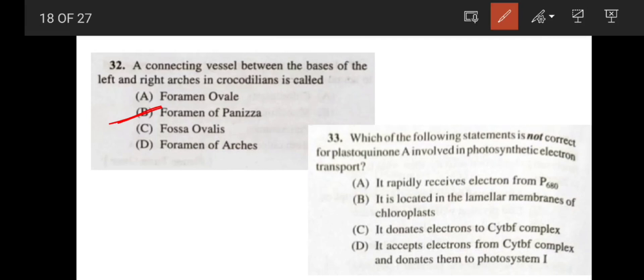Next, which of the following statement is not correct for plastoquinone A involved in photosynthetic electron transport? Option A says it rapidly receives electron from P680 or photosystem 2. Yes, it is correct. It is located in the lamellar membranes of chloroplast. Correct. It donates electron to cytochrome BF complex. Yes, it is also correct. So obviously, the wrong answer will be it accepts electron from the cytochrome BF complex and donates them to photosystem 1. It does not accept electron. It donates electrons to the cytochrome B. So here the wrong answer or you can also say the correct answer is option D.